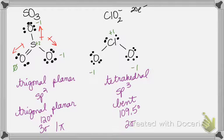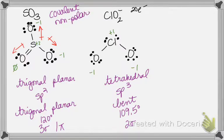SO₃ is a covalent compound and it's nonpolar. That double bond's dipole is the same as those single bonds. Recall we talked about resonance — it doesn't matter which O you double bond because that double bond is moving around to all of the O's. That's why it's nonpolar; the double bond does not make it asymmetrical because it's moving around.